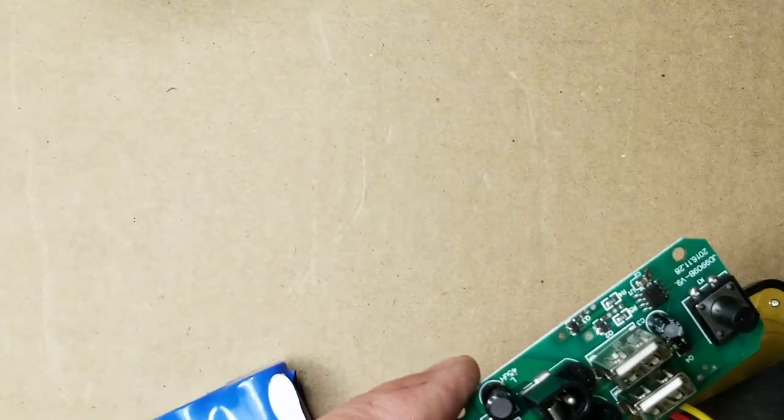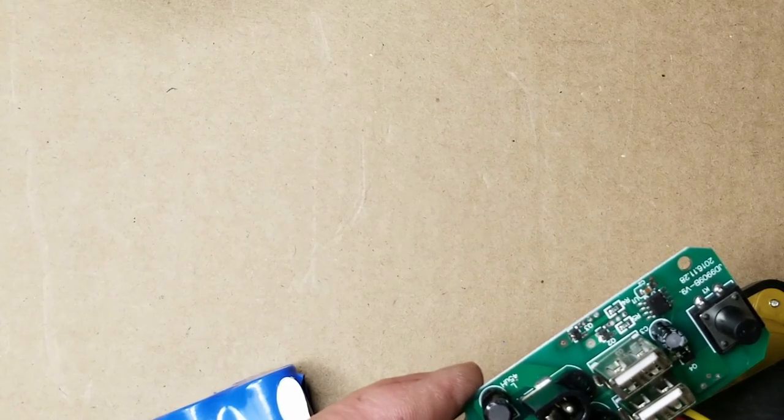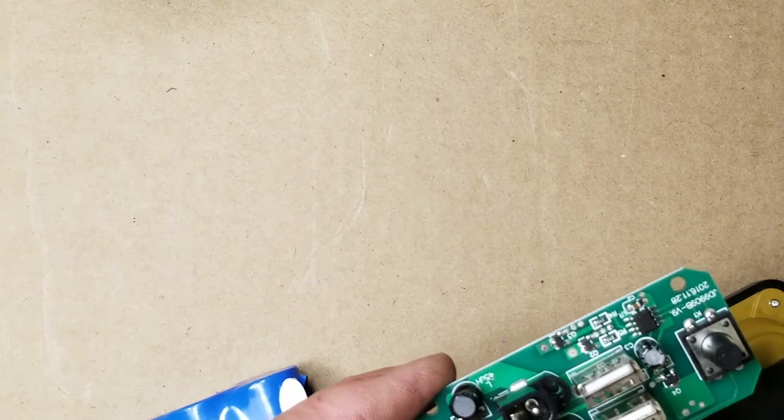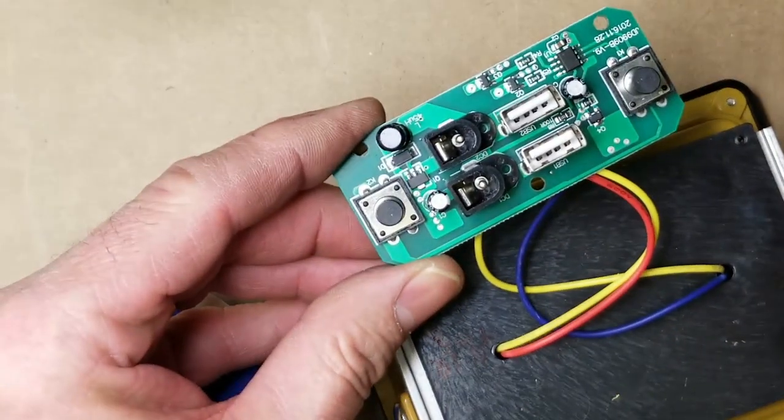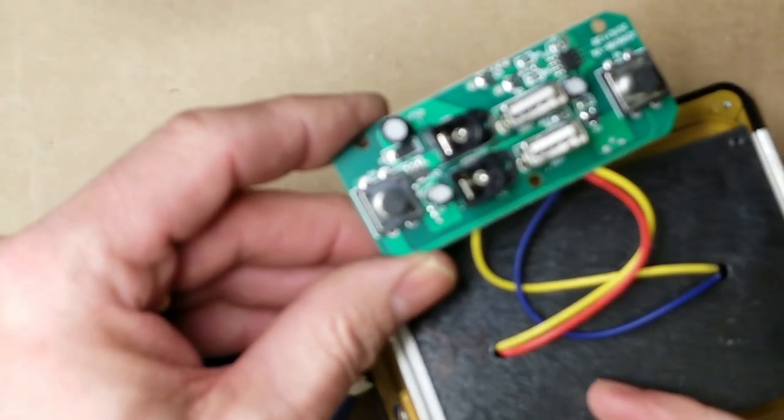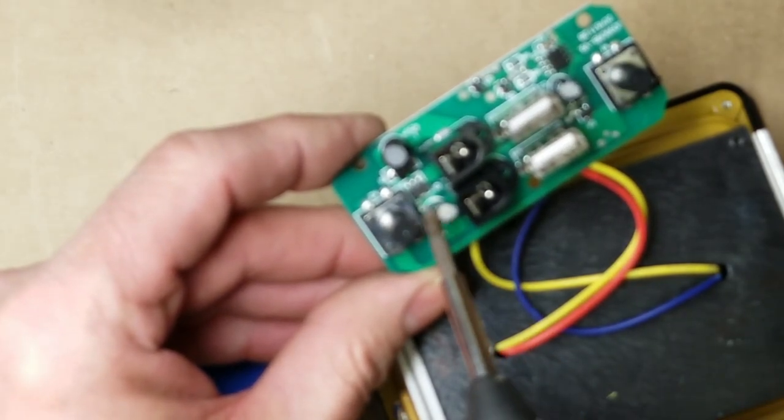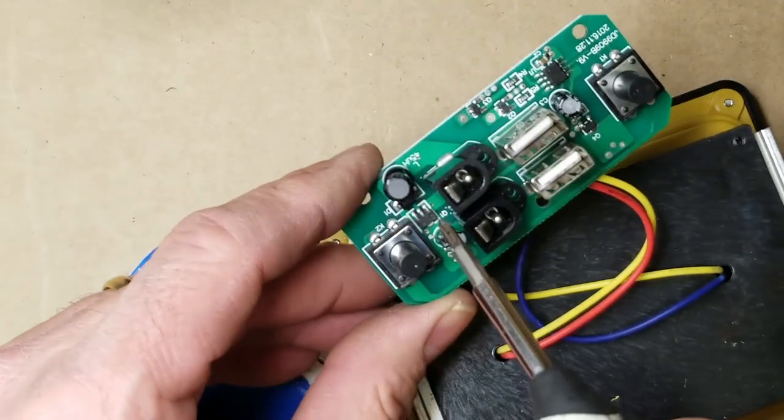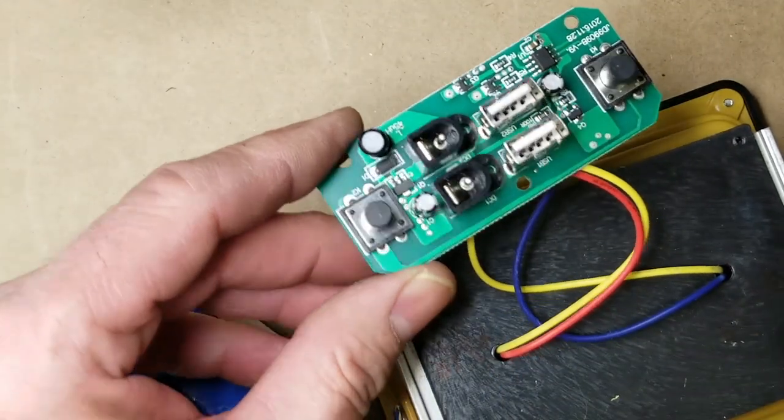And so it's going to go through here and go into this little buck converter or boost converter, I'm sorry, to raise that up enough to drive these LEDs. So the battery is just going to come right onto the board here. And it's going to go into this little boost converter with this coil and a diode. And that's going to raise the voltage enough to drive these LEDs.